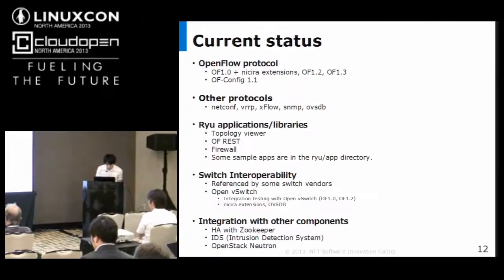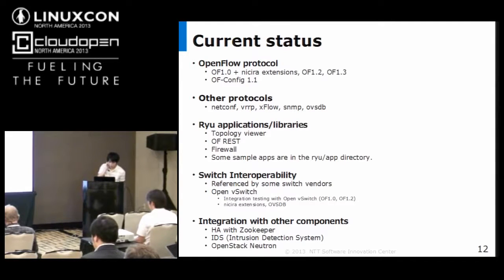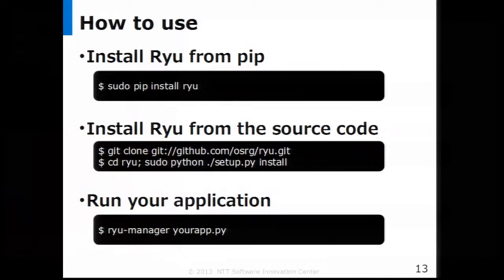Next topic is integration with other components. To provide features such as high availability, security, and cloud orchestration, Ryu cooperates with some other open source projects. For example, Ryu and ZooKeeper provide high availability. And Ryu and an IDS — intrusion detection system — provide flexible intrusion detection. And Ryu and OpenStack provide network virtualization for IaaS environments. Next, I'll explain how to use Ryu and some Ryu applications.